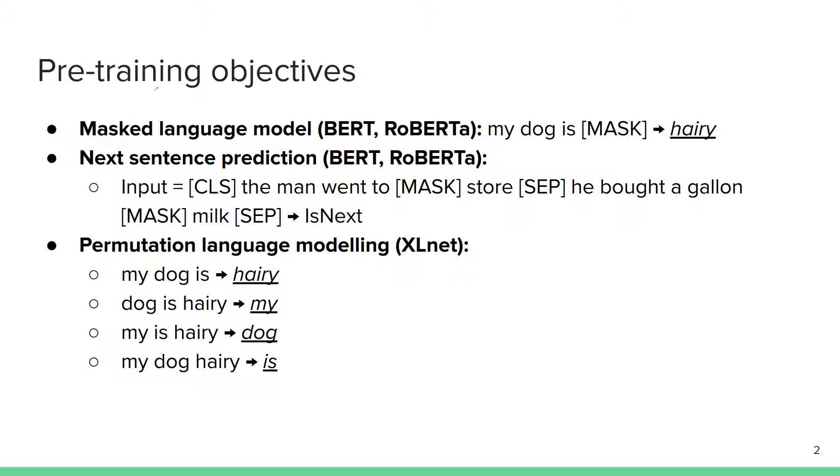Some popular pre-training objectives include the masked language modeling objective introduced by the BERT and RoBERTa papers. RoBERTa builds upon BERT. The basic idea is you have raw text like 'my dog is hairy' and you're replacing certain tokens with a special mask token. You input this masked sequence into a large transformer network and then you're asking the model to predict what is the most likely word that goes into this location, which is 'hairy' in this case. Pre-training has been very effective using this approach.